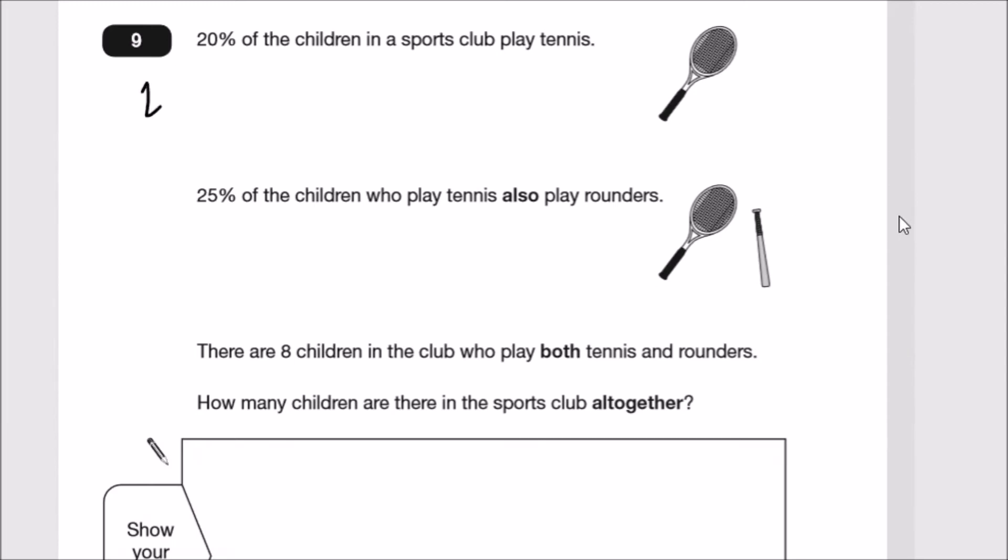There are eight children in the club who play both rounders and tennis. How many children are there in the club? We have to work backwards. Let n be the number of children altogether. 20 of these children play tennis, so 20 is like one fifth, so n over 5 play tennis.